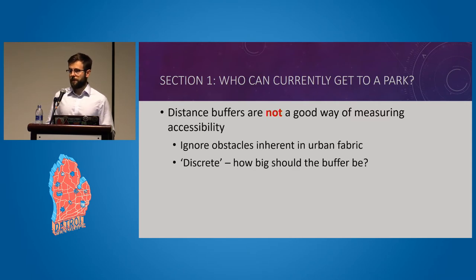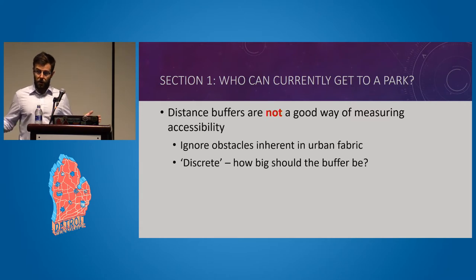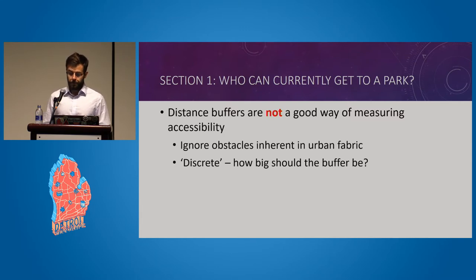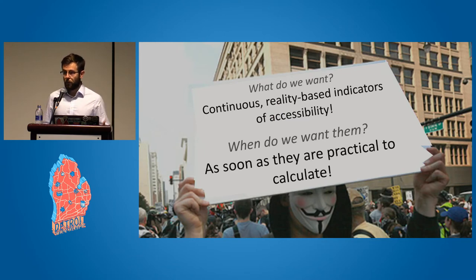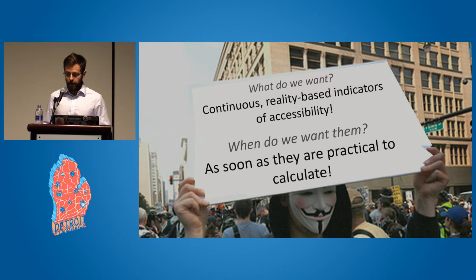There's also the boundary issue: if you make your boundary 500 meters from a park, does someone 499 meters away have access and someone 501 meters away not? That just doesn't make logical sense. A good indicator ought to be continuous as opposed to discrete, and ought not to be based on distance, which is a poor assumption in urban environments. I'm really passionate about applying these principles in measuring accessibility for any service — hospitals, banks, markets, whatever it might be.